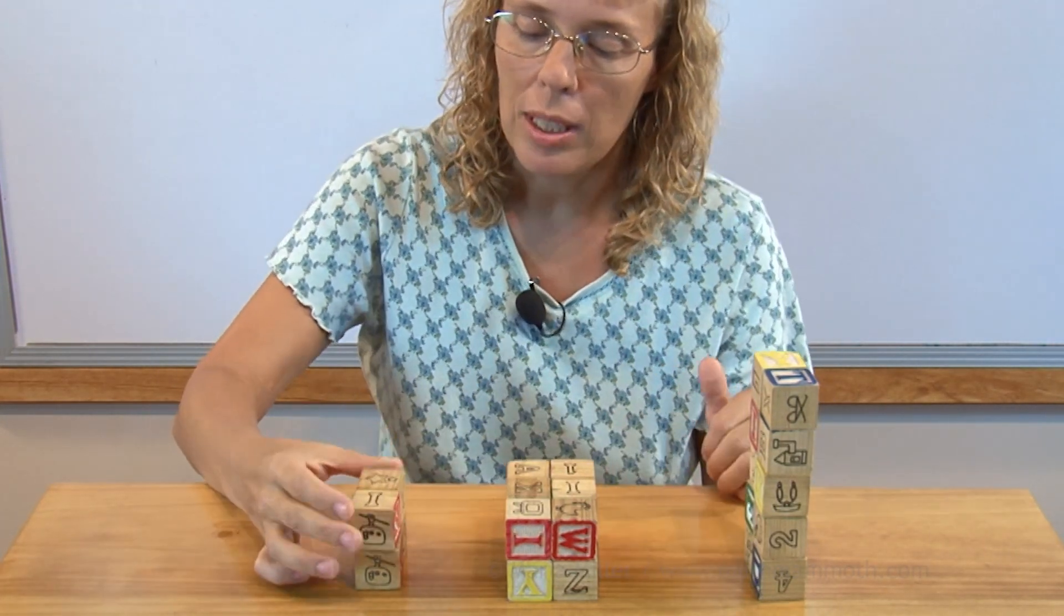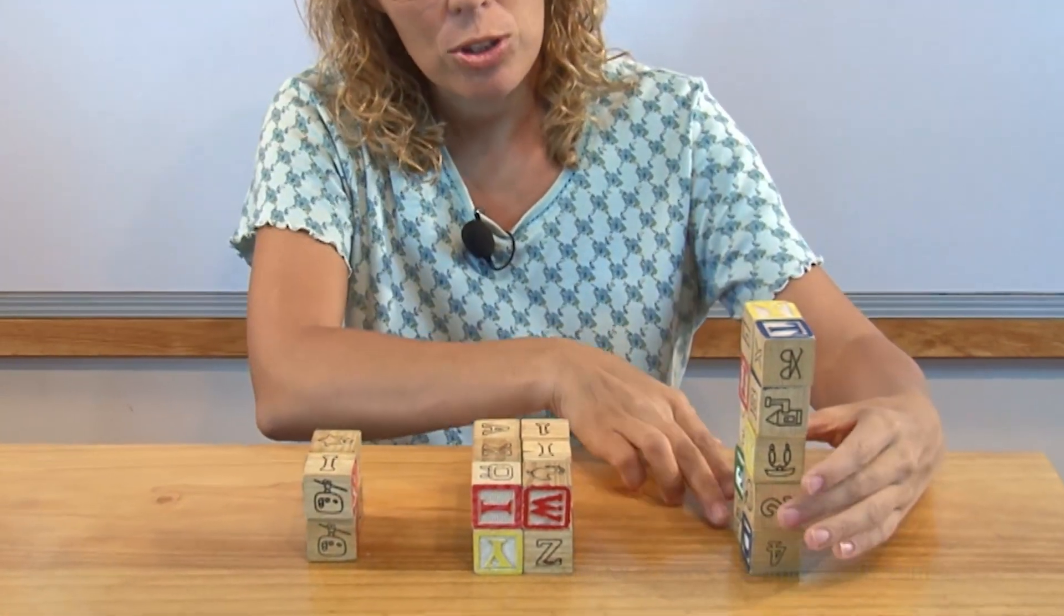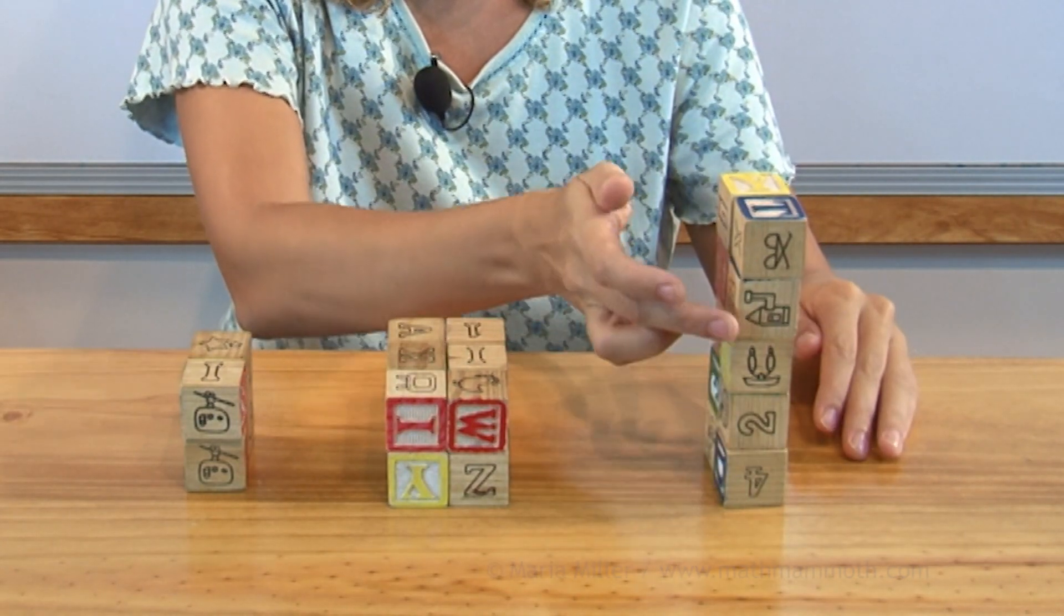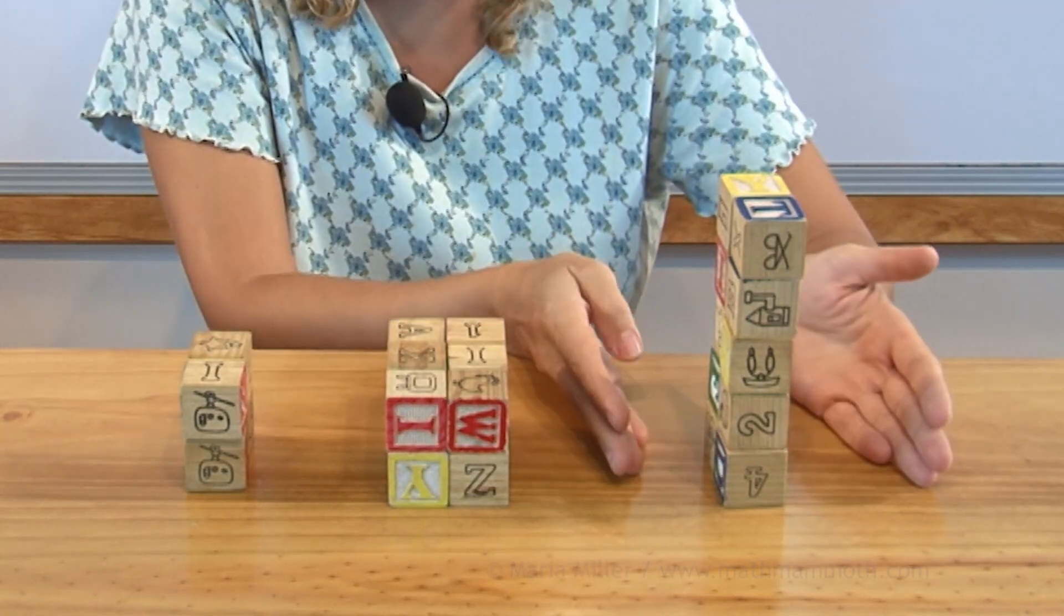There's two on the bottom, and then two layers up in this one, so a total of four, right? Here we have two on the bottom, and then we have one, two, three, four, five layers up. So five times two is ten blocks, ten cubic units in total.